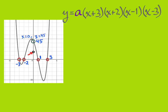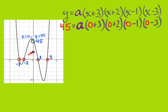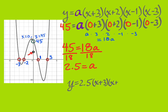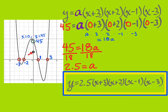Following the same process, I substitute x equals zero and y equals 45 into the factored form equation and solve for a. On the right-hand side I get a times three times two times negative one times negative three, which is 18a. So 45 equals 18 times a. Dividing both sides by 18, I quickly find that a equals 2.5. So my equation is 2.5 times all those factors. It was really nice to have that y-intercept given to us.